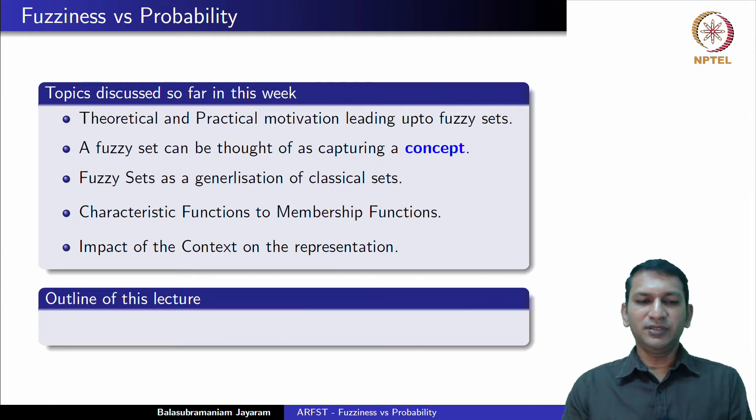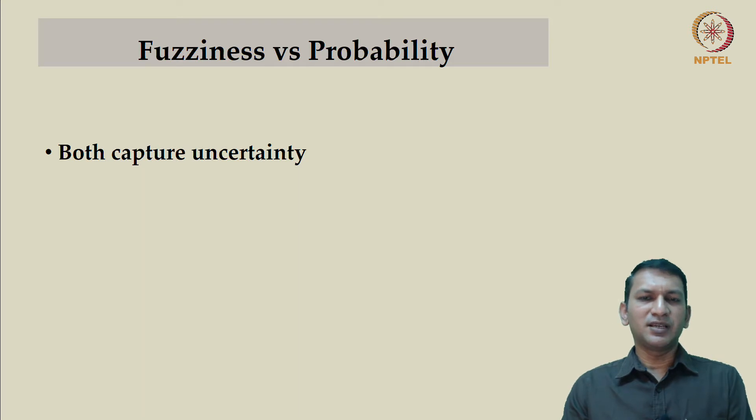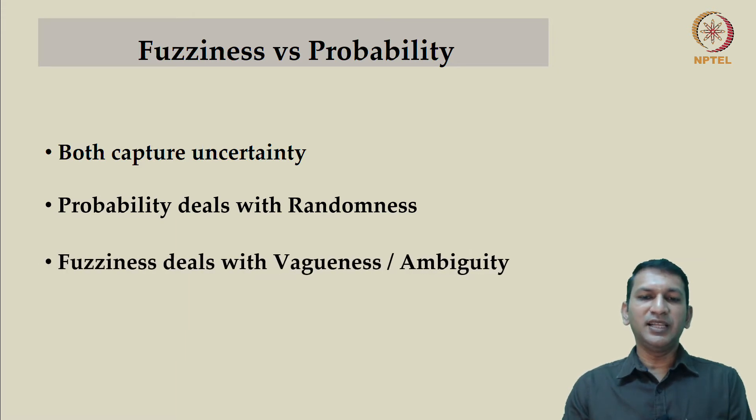In this lecture we would deal with two types of uncertainty: randomness and vagueness. Both fuzziness and probability capture different types of uncertainty. While probability deals with randomness, fuzziness deals with vagueness or ambiguity. Allow me to explain this in the rest of this lecture.